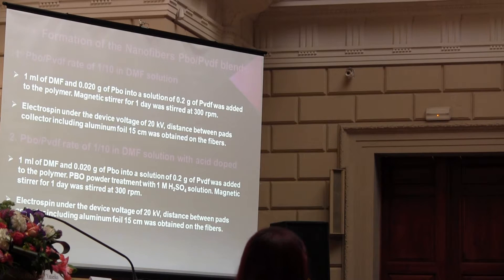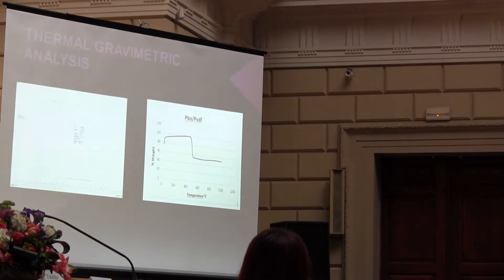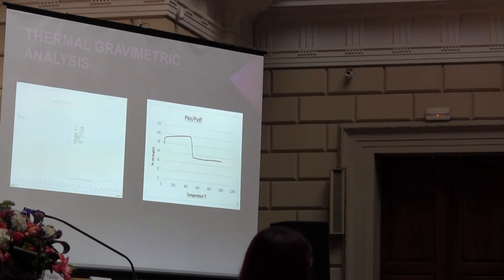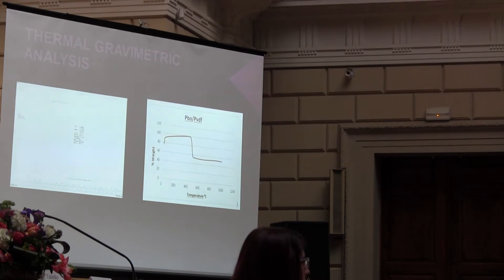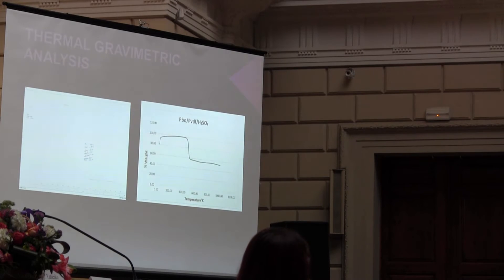Second solution: I tried treatment with one molar sulfuric acid of the polyimide, using the same parameters. Thermal gravimetric analysis showed high thermal stability resistance at about 480 degrees for this compound. Another compound with sulfuric acid treatment showed the same thermal stability at 480 degrees.